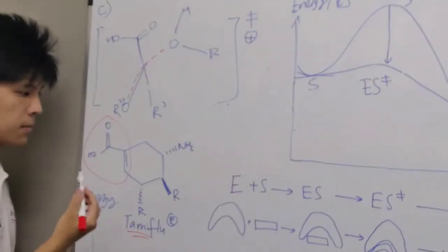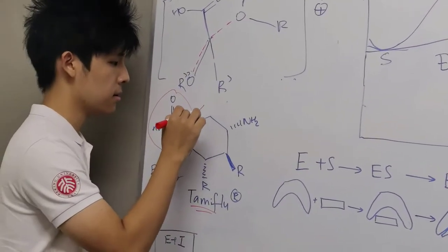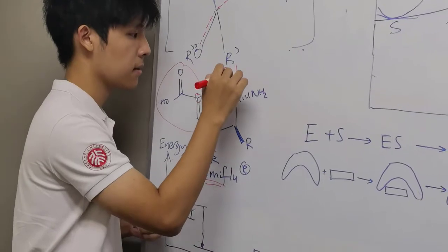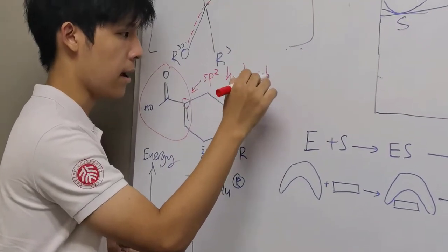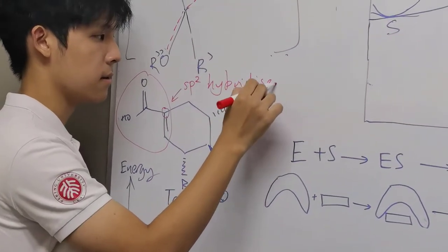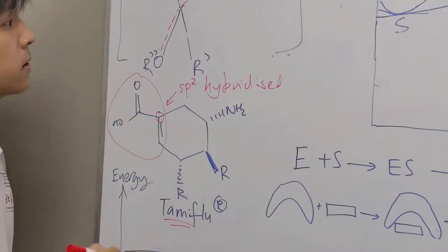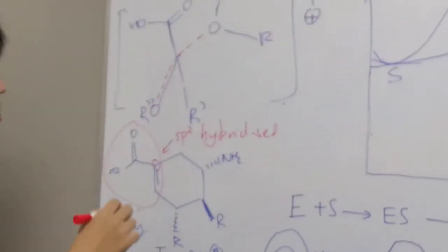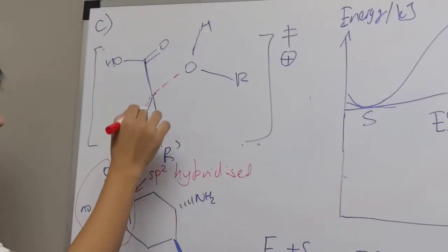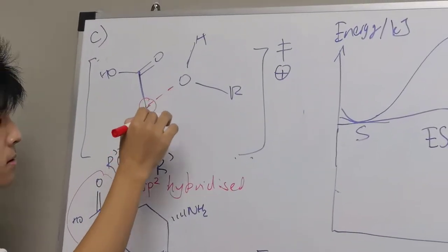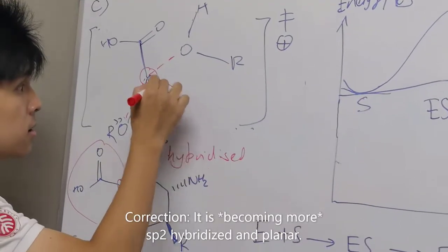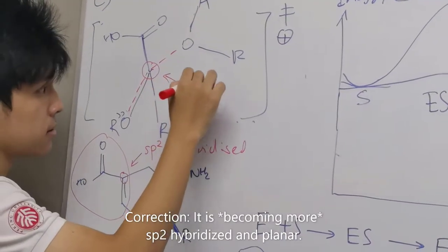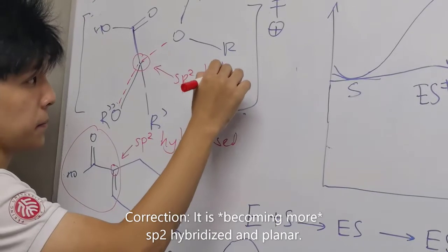But the more important thing is that Tamiflu has a similar structure to our transition state. Look at this part of the molecule: this carbon is sp2 hybridized and it is planar. If you look at our transition state, this carbon — which corresponds to this carbon over here — is also sp2 hybridized and is also planar.